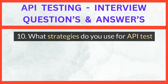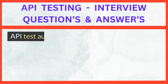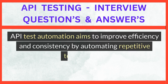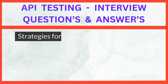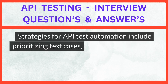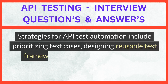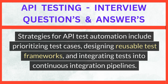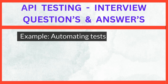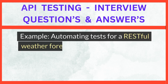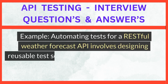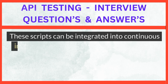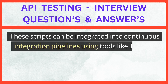What strategies do you use for API test automation? API test automation aims to improve efficiency and consistency by automating repetitive testing tasks. Strategies include prioritizing test cases, designing reusable test frameworks, and integrating tests into continuous integration pipelines. For example, automating tests for a RESTful Weather Forecast API involves designing reusable test scripts using frameworks like REST Assured, which can be integrated into continuous integration pipelines using tools like Jenkins, enabling automated execution of tests with each code commit to ensure consistent test coverage across releases.